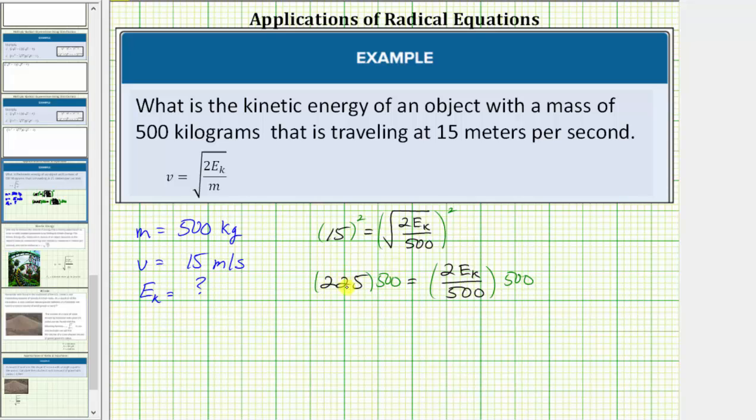On the left side 225 times 500 equals 112,500. On the right side 500 as a fraction is equal to 500 over 1. Before multiplying notice how we can simplify the common factor of 500 between the numerator and denominator. The right side simplifies to two times E sub k times one or just two times E sub k.